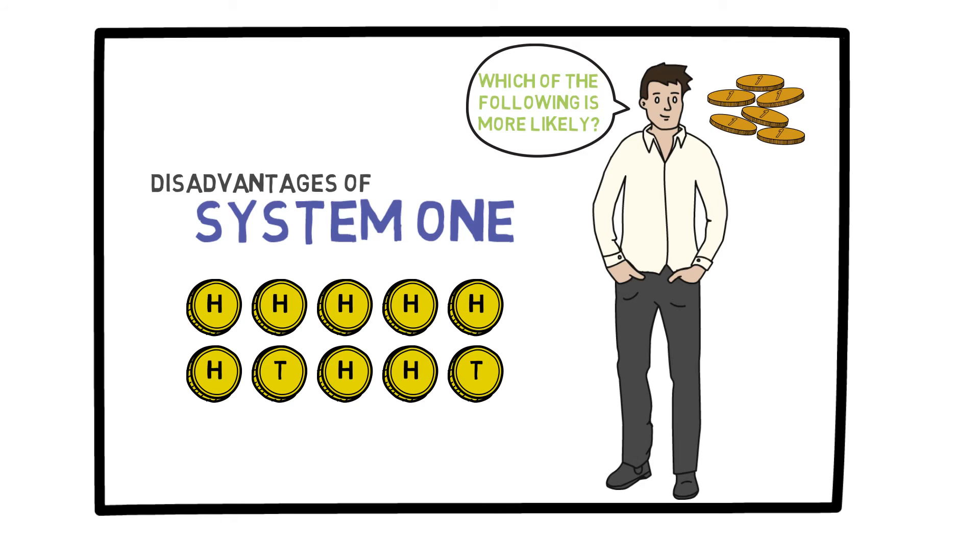If you have not been trained in probability, it is likely that you will say the second one is more likely because it looks more random. However, the truth is that they are both equally likely because the probability of both of them is 1 over 32. But again, in our minds, the second one looks more random to us. A situation like this one is a good example of when to use your System 2.